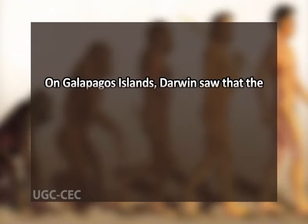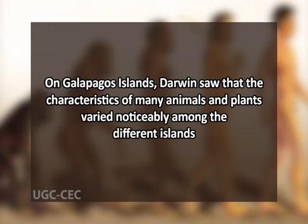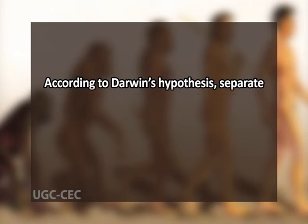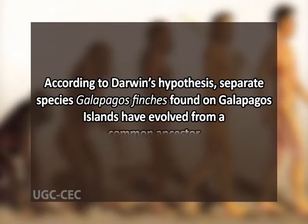Darwin's observations on the Galapagos Islands influenced him the most. The islands are near one another but have different climates. He saw that the characteristics of many animals and plants varied noticeably among the different islands. He wondered whether animals on different islands had once belonged to the same species — for example, the Galapagos finch. According to this hypothesis, these separate species would have evolved from an original ancestor species after becoming isolated from one another.